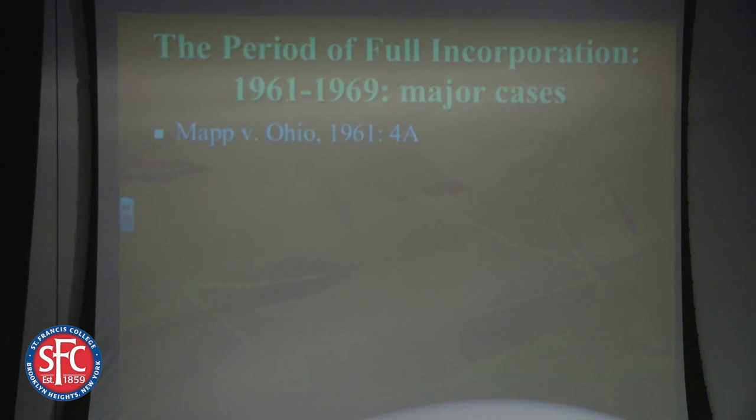Now let me get to the bulk of what this talk is actually about: the period of full incorporation from 1961 to 1969. It doesn't happen chronologically. By the end of the 1950s, Earl Warren told his law clerks that he wanted cases that would help him and a majority of the justices incorporate — apply the 14th Amendment's Due Process Clause to the states and the amendments attached to them. So they began literally looking for petitions from people dealing with amendments 4, 5, 6, and 8.